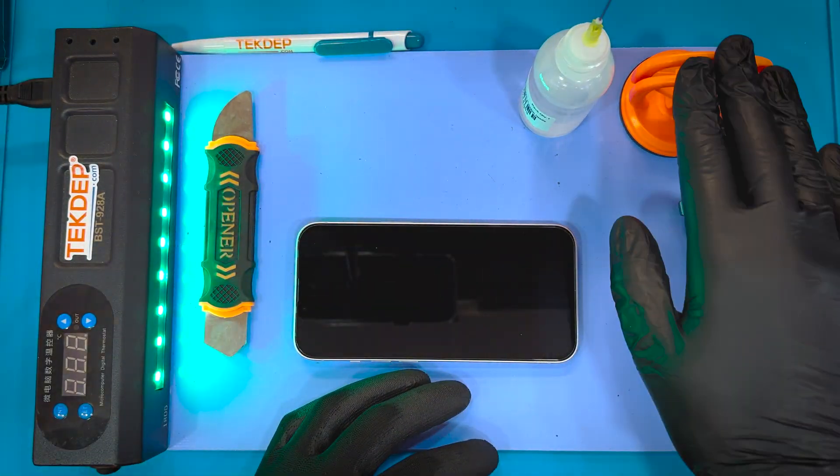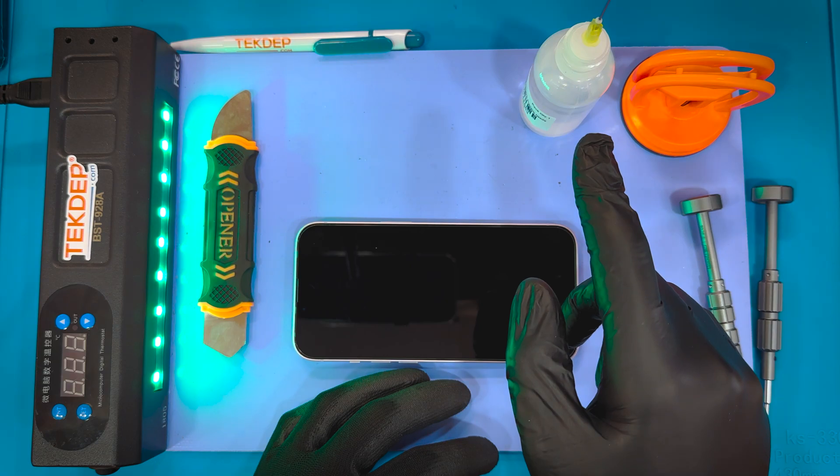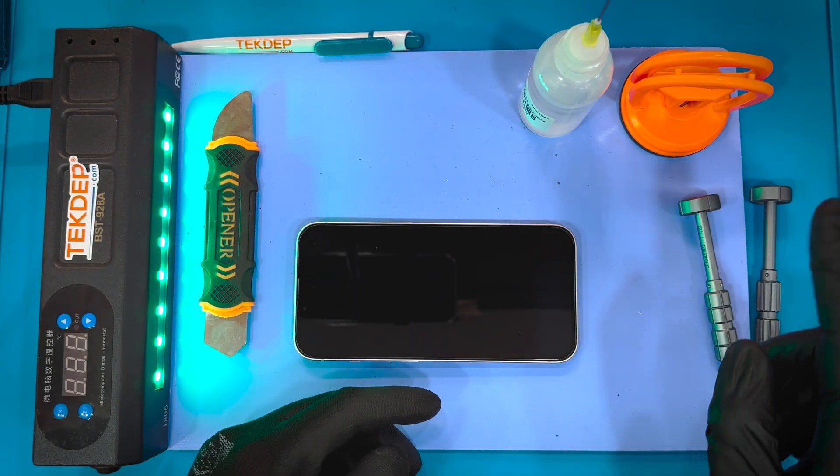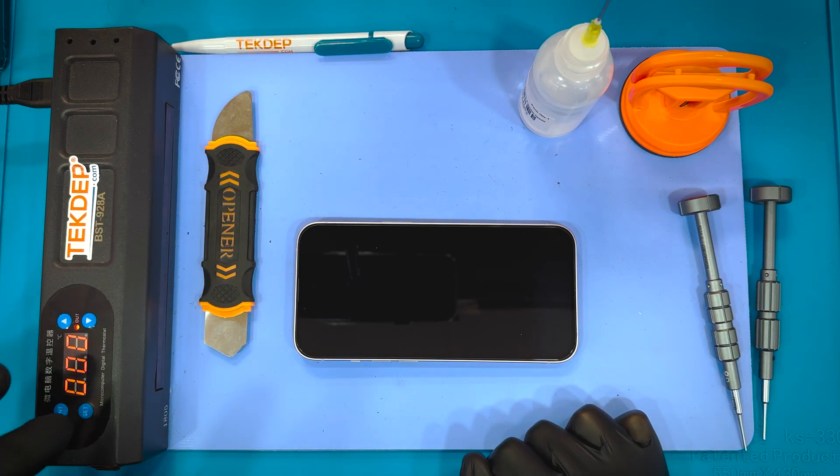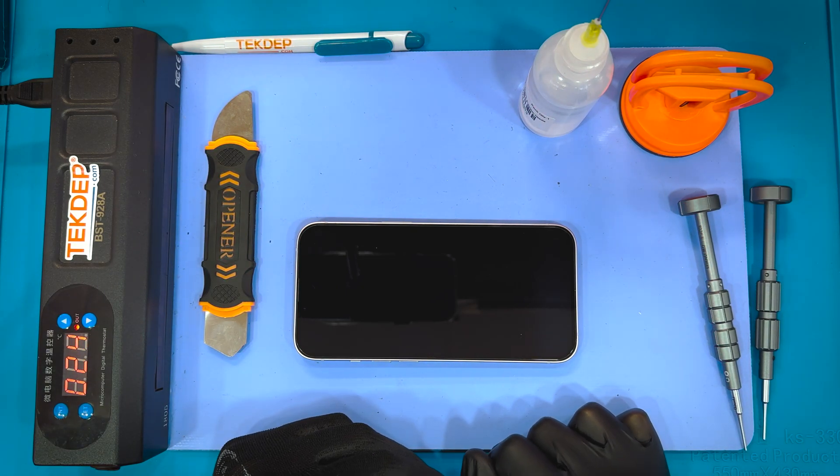Today we're going to be using a few tools, most of which are on screen: suction cup, alcohol, eye opener, tri-wing and pentalobe screwdrivers. There's a couple other tools I'll run through as we see them, but that's pretty much all you're going to need.